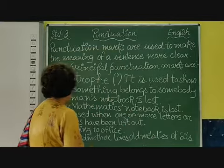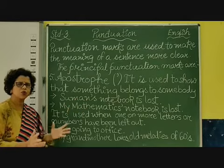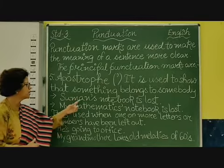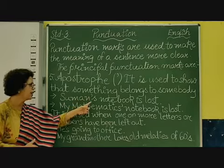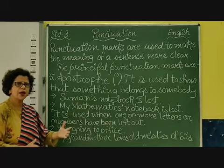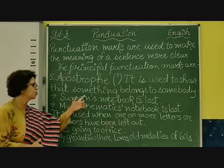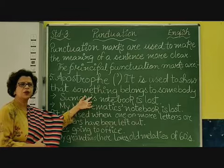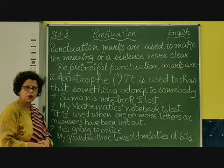So like you can now look at the sentence. Suman's notebook is lost. Now whose notebook? Suman is the name of the girl, and then I put apostrophe, and then I put S. This shows that it is belonging to somebody. Whose notebook? Suman's notebook. So put apostrophe for this and then write S.